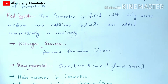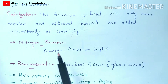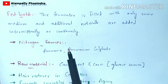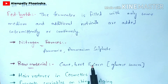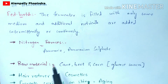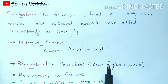The nitrogen sources required for the production of glutamic acid are ammonia and ammonium sulphate. The raw materials — sugarcane, sugar beet, and corn — are glucose sources that come under the classification of carbohydrates.